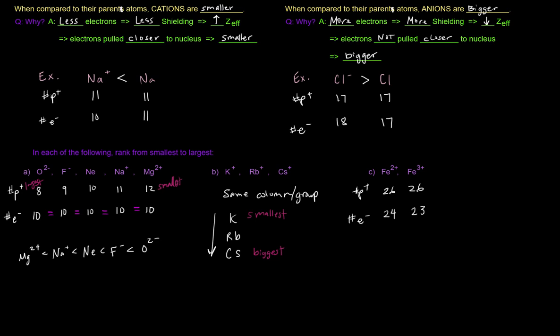So Fe3 plus will have the higher effective nuclear charge, and therefore will be smaller, right? So Fe3 plus is smaller, and then Fe2 plus is bigger, so you would rank them like this. Fe3 plus is smaller than Fe2 plus, okay?